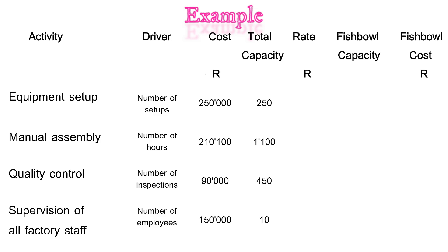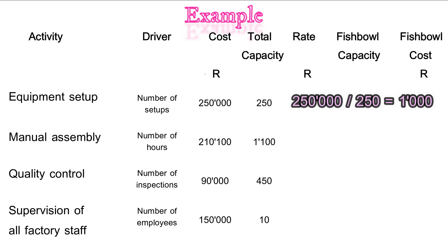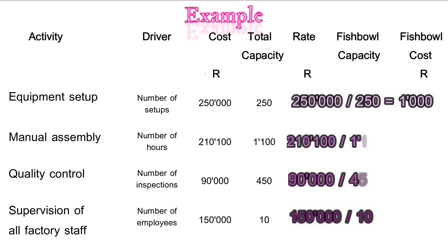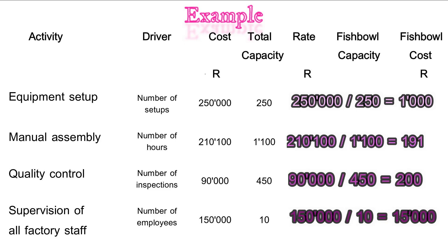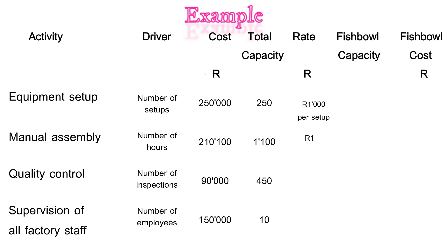Now let's work out the rates — how much are we spending on each activity. Total cost of 250,000 Rand for equipment setup divided by total capacity of 250 setups gives us 1,000 Rand per setup. We do the same for manual assembly, quality control and supervision of all factory staff, giving us a rate per setup, rate per hour, rate per inspection and rate per employee.